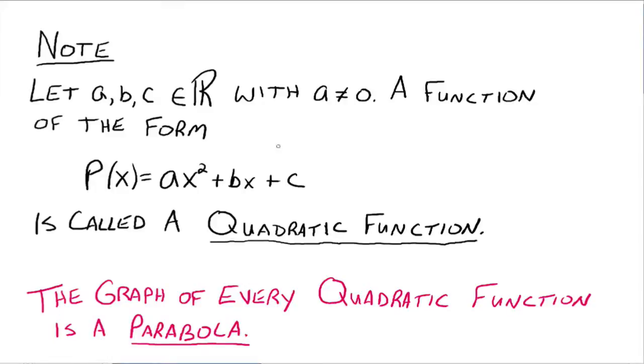Alright, so let a, b, and c be real numbers with a not zero. So we have to throw zero out for that one. Then a function of the form P(x) = ax² + bx + c is called a quadratic function. So make note that when you have x squared running around there, your highest exponent of 2, it's a polynomial function, highest exponent of 2, then it's called a quadratic function.